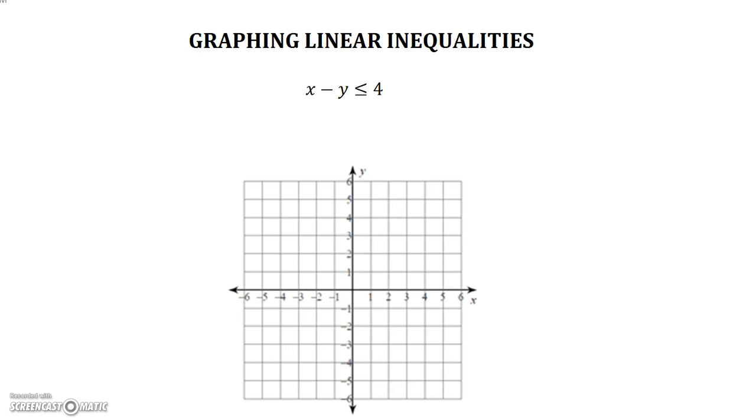Therefore, you need to manipulate the inequality to make it into slope-intercept form. Now we can do this because we've practiced that with our equations. However, I just want to remind you of one very important rule. If at any point you multiply or divide by a negative number, the inequality sign flips. Okay, and we'll practice that.